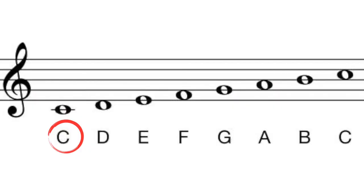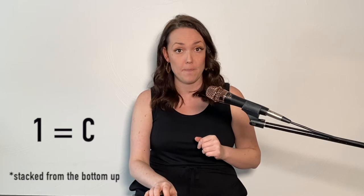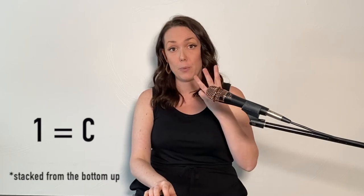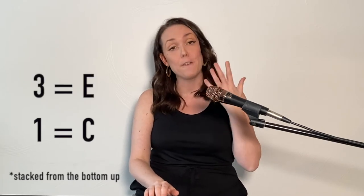The formula for a major triad is 1-3-5 — that's the 1, the 3, and the 5 of a major scale. If we're dealing with a C major chord, for instance, the 1 is C, the 3 is E, and the 5 is G.